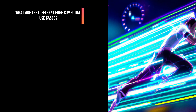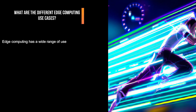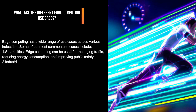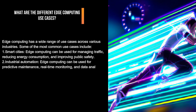What are the different edge computing use cases? Edge computing has a wide range of use cases across various industries. Some of the most common include: smart cities, where edge computing can be used for managing traffic, reducing energy consumption, and improving public safety; and industrial automation, where edge computing can be used for predictive maintenance, real-time monitoring, and data analytics in manufacturing plants.